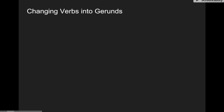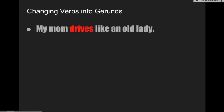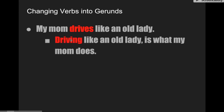So, changing verbs into gerunds — looking at a verb and saying, 'How can I rewrite this sentence using the gerund form?' 'My mom drives like an old lady.' The verb is 'drives,' highlighted in red. I change it to: 'Driving like an old lady is what my mom does.' So basically I just flip that sentence around, change a couple of words, and say the same thing in a different way.